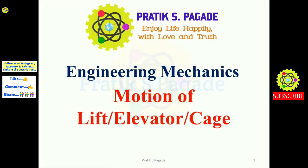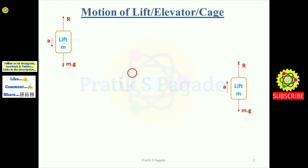Hi students, welcome. In this video we are going to study about motion of a lift, elevator, or cage. Suppose this is the lift and inside this lift there is a mass of m kg. This lift is moving in upward or downward direction with a uniform acceleration 'a'. This is the reaction force of the lift, or you can call it the tension in the cable of the lift, R, and this is mg, which is the weight of the lift.